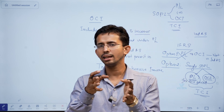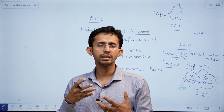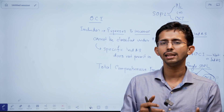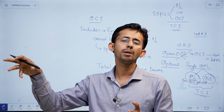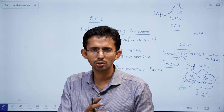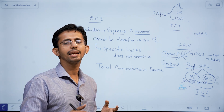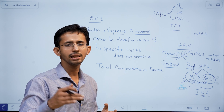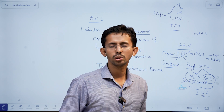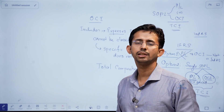Understanding OCI is important because when we study specific standards, we will come across certain items. For example, when we talk about the provision for gratuity, there will be remeasurement of actuarial gains. Remeasurement of actuarial gains is one item which you cannot take to your normal profit or loss account; it has to be taken as OCI. This actuarial valuation is very common in almost all companies with employees. Whenever you prepare Ind AS financial statements, OCI is supposed to be there, so you need a clear understanding of the term OCI and its relevance in preparing the statement of profit or loss.